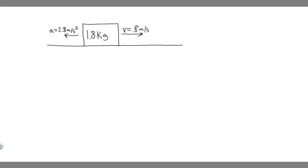In this problem, we're told a 1.8 kilogram block slides on a horizontal surface with a speed of v equals 0.8 meters per second and an acceleration of magnitude a equals 2.8 meters per second squared, as shown in the figure. Part A: What is the coefficient of kinetic friction between the block and the surface? Part B: When the speed of the block slows to 0.4 meters per second, is the magnitude of the acceleration greater than, less than, or equal to 2.8 meters per second squared? Explain.